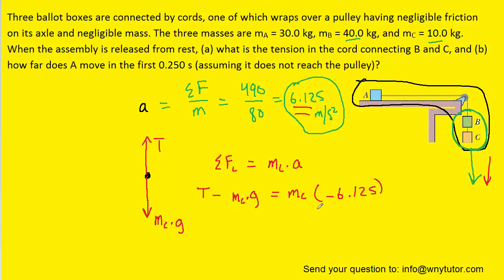So, we'll add mg over to the right side and solve for the tension. Plugging in the known values yields a tension of approximately 36.8 newtons. So, that is the correct answer to part A.